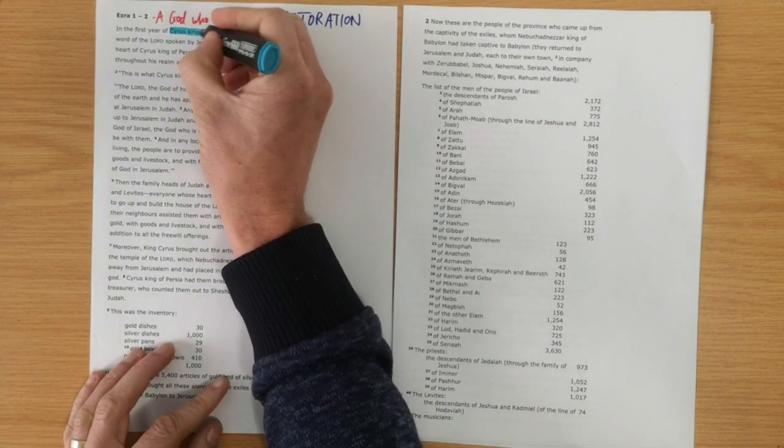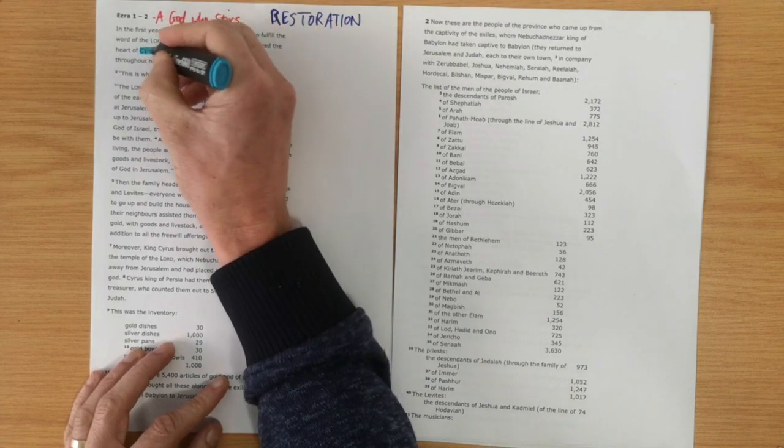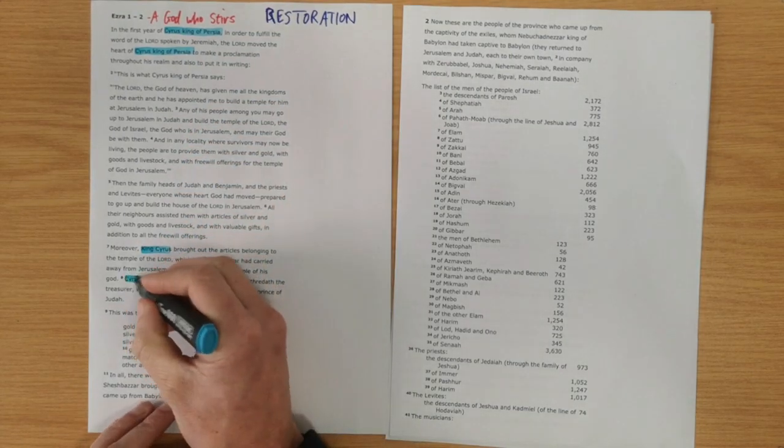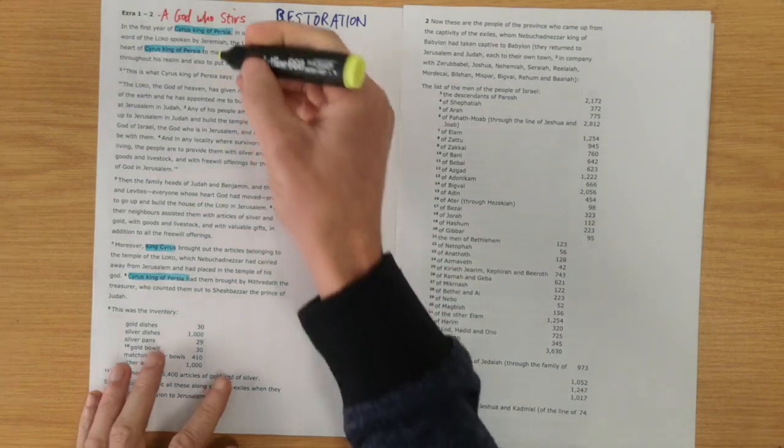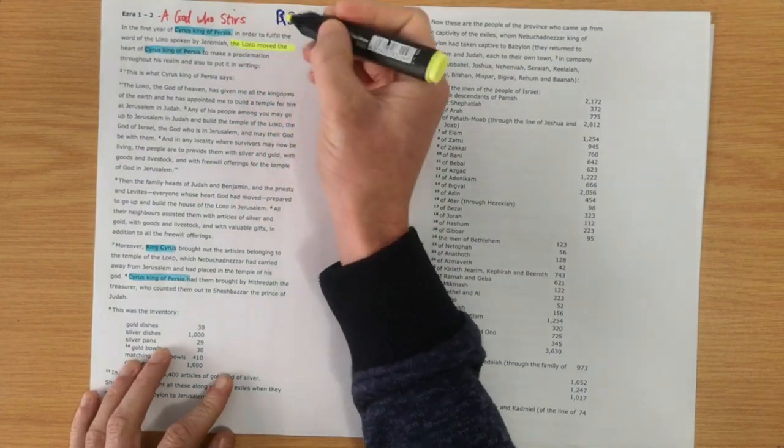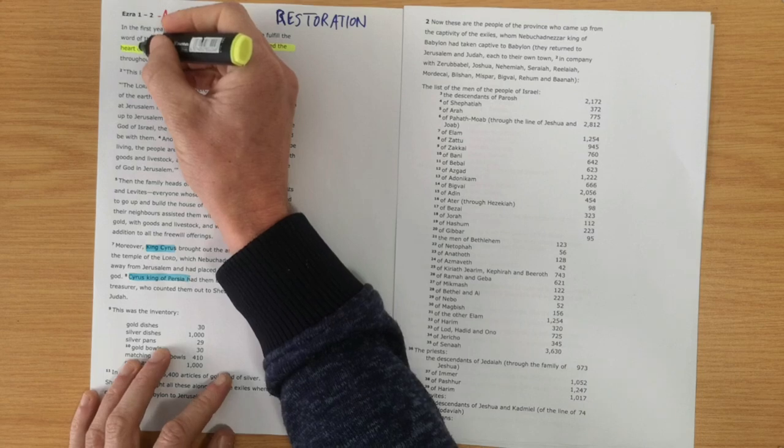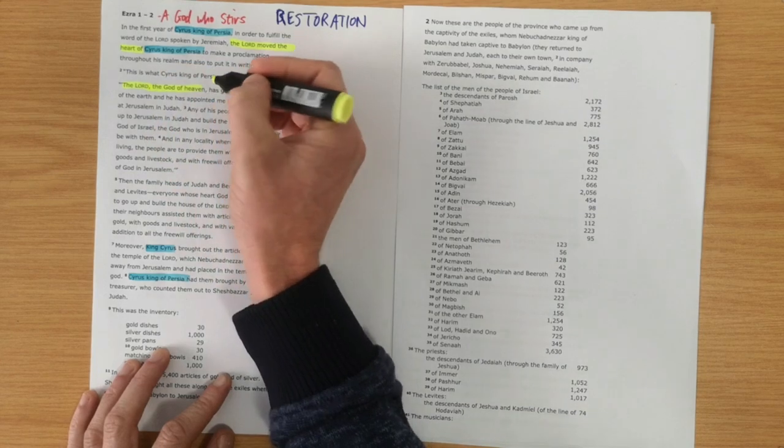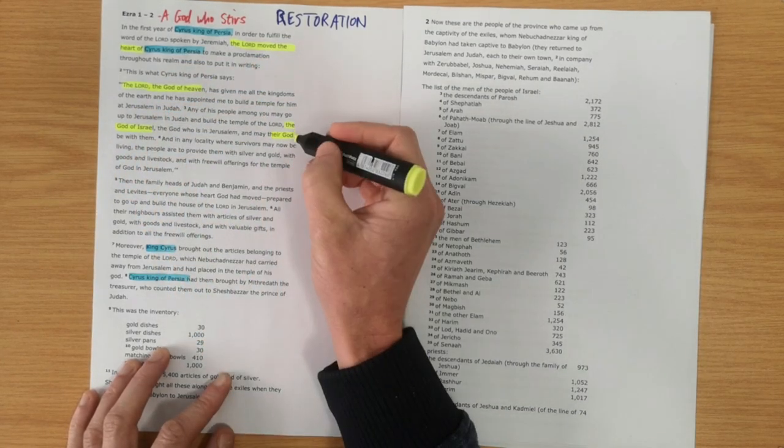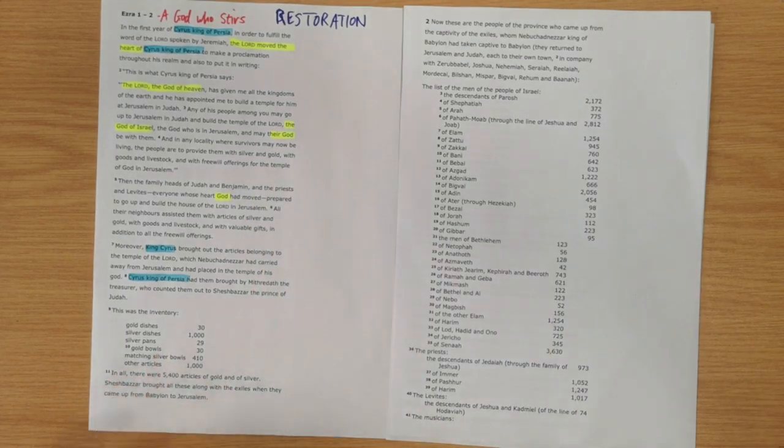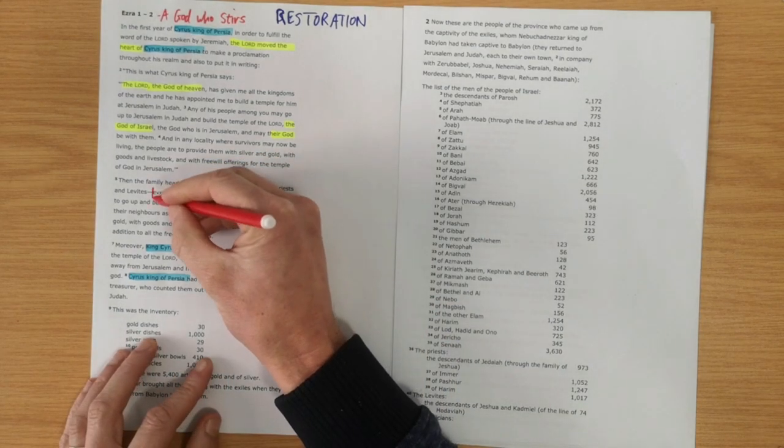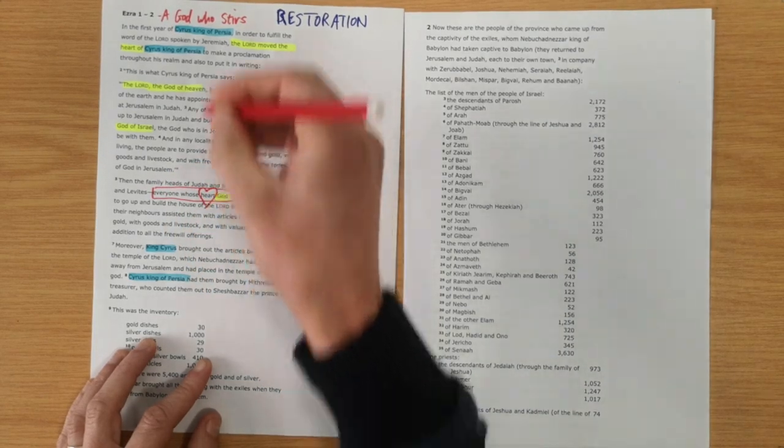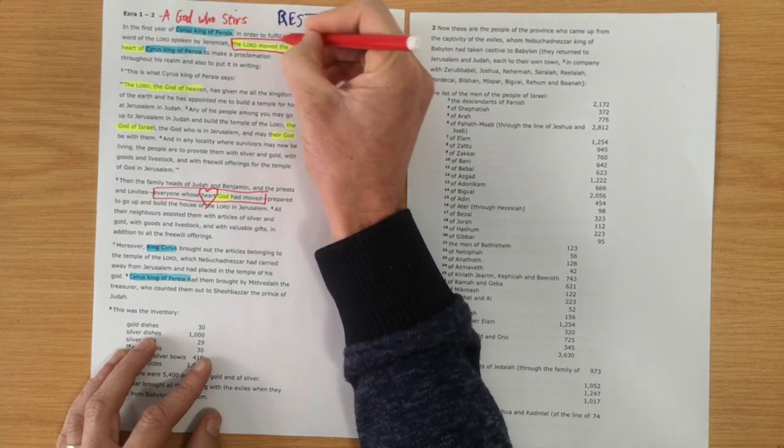So, obviously, it starts with Cyrus, the king of Persia. And he is a key character in this opening section. But ultimately, the key player in this narrative is the Lord God himself who moves hearts. Cyrus refers to him, the Lord, the God of heaven, the God of Israel. And we see again here that God moved the hearts. Everyone whose heart God had moved or had stirred. We see here the Lord moved the heart of Cyrus.